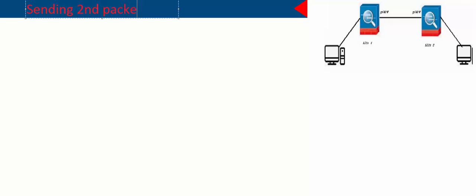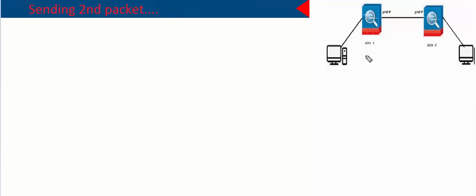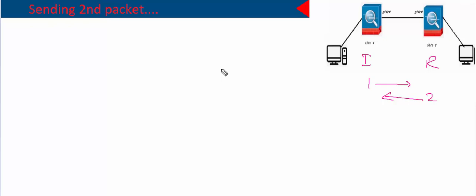Hello and welcome back. Today we are going to see the second packet — sending the second packet. You have seen that the initiator sends the first packet of the communication and the responder sends the second packet. We have already seen what happens in the first packet, what information is shared, what parameters are sent. If you haven't already, you can go back to my previous video and understand how the first packet works.